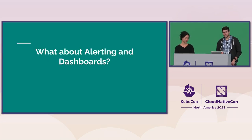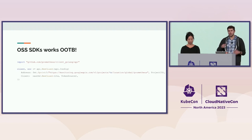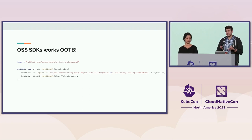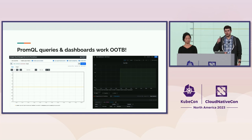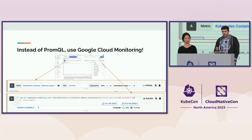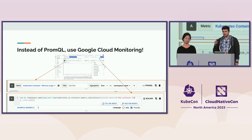What about alerting and dashboards? That's actually a trick question — we already support them because we implemented the Prometheus API directly on top of Monarch. For example, in a Go code snippet, all you have to do is replace the address with Google Cloud Monitoring's URL and everything works as expected. This works for any dashboard tool, and we've implemented a lot of the APIs so autocomplete and everything like that still works. In the Google Cloud Monitoring Metrics Explorer you can use AI or write a query and choose whether you want to use MQL or PromQL.